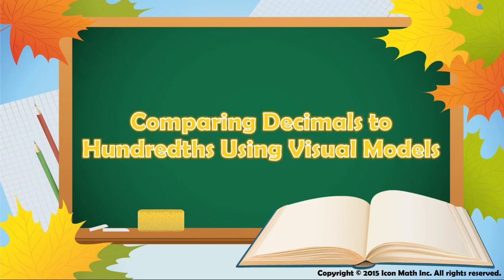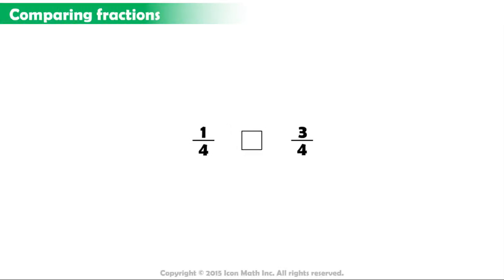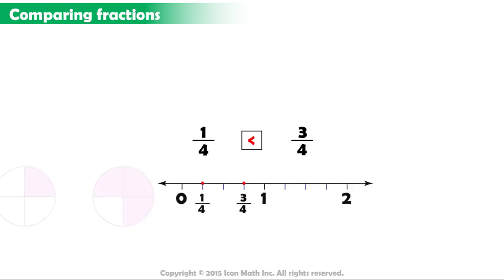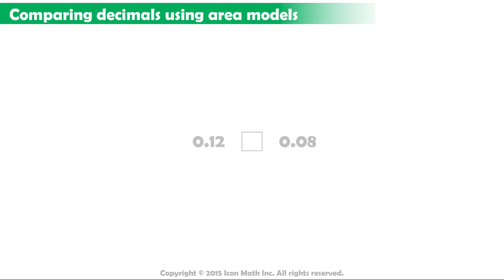Comparing Decimals to Hundredths Using Visual Models. We learned earlier how to compare fractions using area models and the number line. In this lesson, we are going to compare decimals using these models. Let's take the two decimal numbers, twelve hundredths and eight hundredths, and compare them.